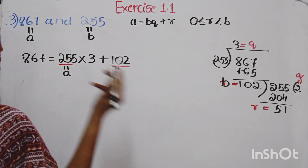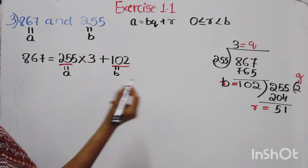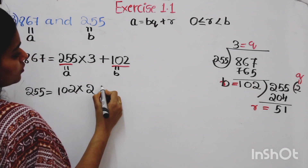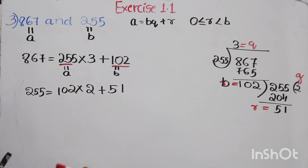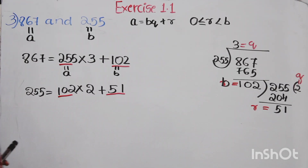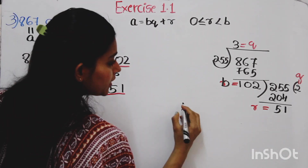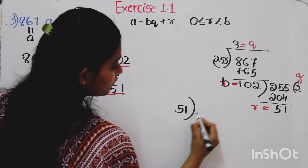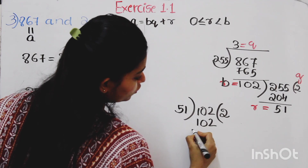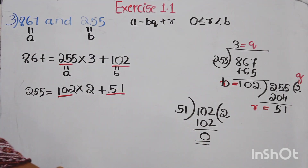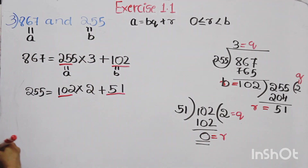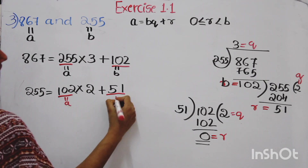Since R is not equal to 0, write again: A is 255, B is 102, Q is 2, and R is 51. Since R is not equal to 0, apply division lemma to 102 and 51. Take 51 as B and 102 as A, since 102 is greater than 51. Dividing 102 by 51, the remainder is 0 and the quotient is 2. Stop the division process since remainder is 0.